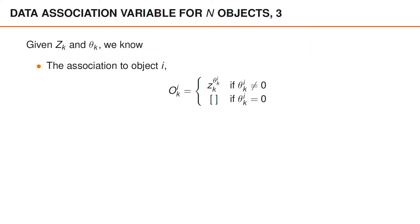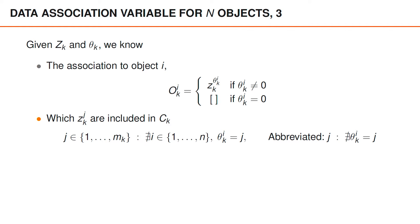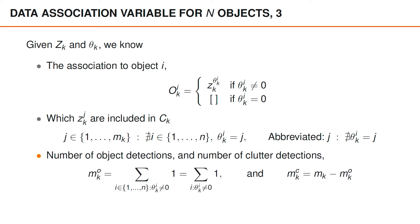Given the measurement set and the data association Theta, the association to object i is either a measurement Z_{Theta_i} or it is empty. So given Theta, we know what O_i is. We also know which measurements are included in the clutter — mathematically, these are the measurements indexed by j such that no object index i exists for which Theta_i equals j. We also know the number of object detections m_o and clutter detections m_c: m_o is the number of non-zero entries in the vector Theta, and m_c equals m minus m_o.